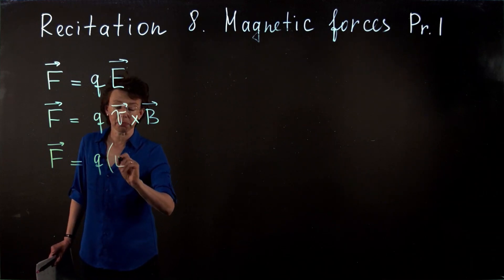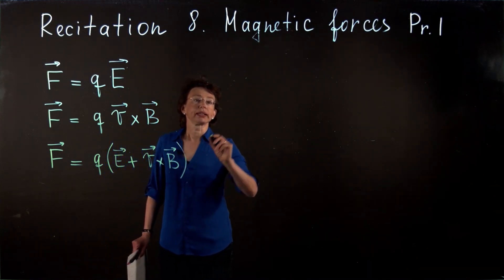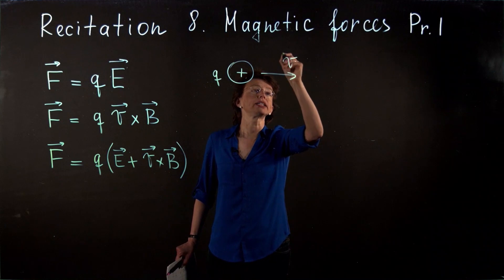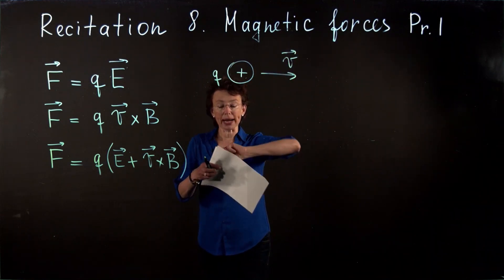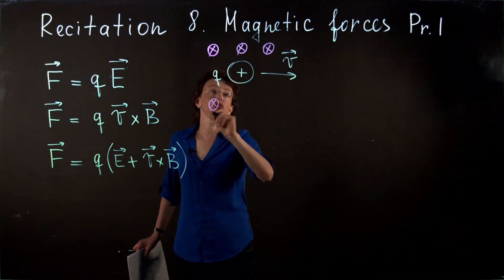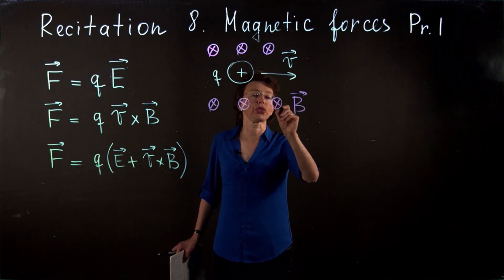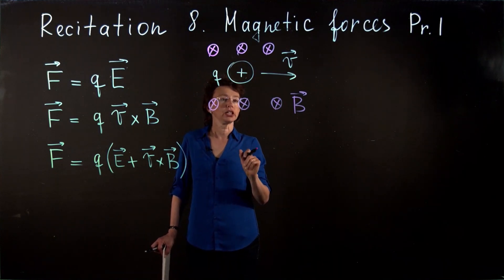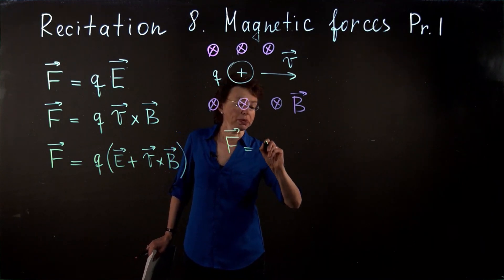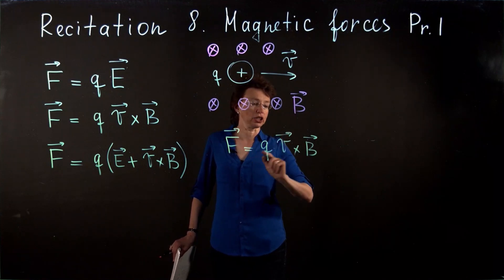I will factor out q, and then in parentheses I will have E plus v cross B — this is the Lorentz force. As an example, let's consider a positively charged particle with charge q that is moving to the right with a given velocity v. This particle is placed into a uniform magnetic field with constant magnitude B. The direction of this magnetic field is into the page — the circle with a cross symbol indicates the field is into the page. What will be the force exerted on this charged particle?